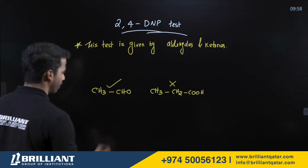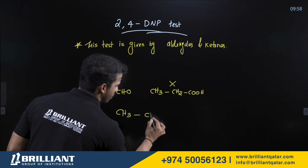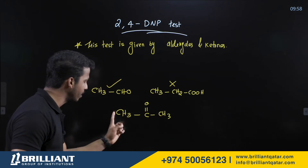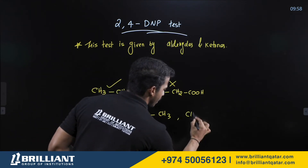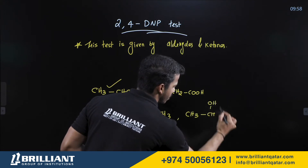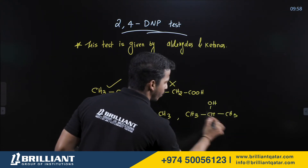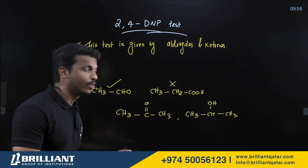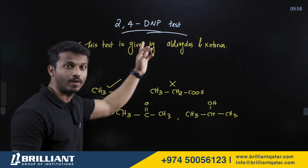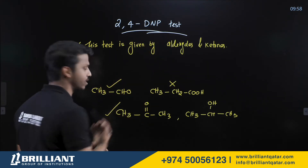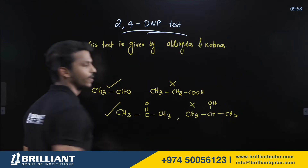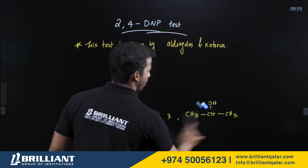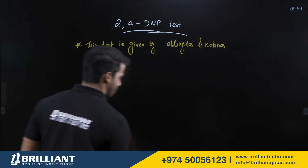Another example: how can you distinguish CH₃COCH₃ (propan-2-one, a ketone) from CH₃CH₂OH (an alcohol)? The 2,4-DNP test is given by aldehydes and ketones, so the ketone can give this test but the alcohol cannot. This is the purpose of the 2,4-DNP test.